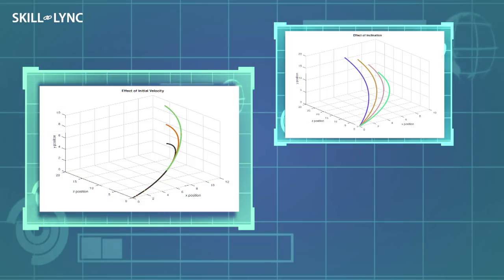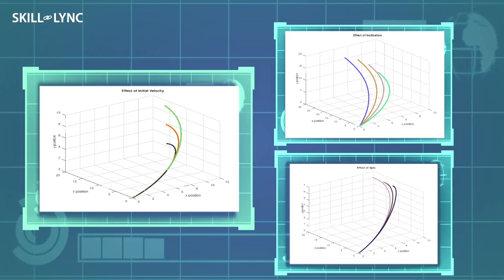With such a program, we can look at the path that a soccer ball would take when it is kicked at different velocities, different angles, and even different spin rates.